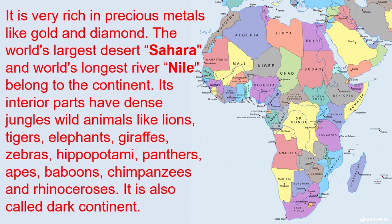The world's largest desert, the Sahara, and the world's largest river, the Nile, belong to this continent. Its interior parts have dense jungles and wild animals like lions, tigers, elephants, giraffes, zebras, hippopotamus, panthers, baboons, chimpanzees, and rhinoceros. Africa is also called the dark continent.